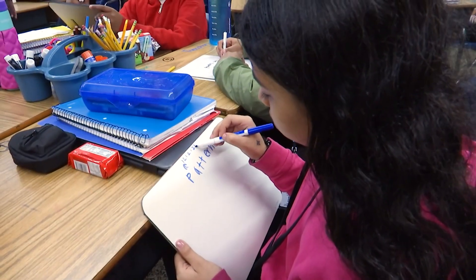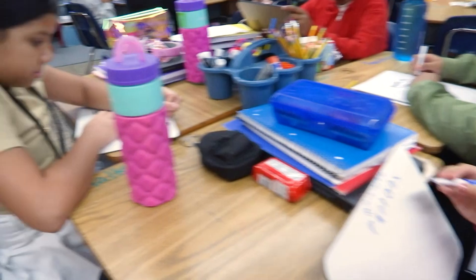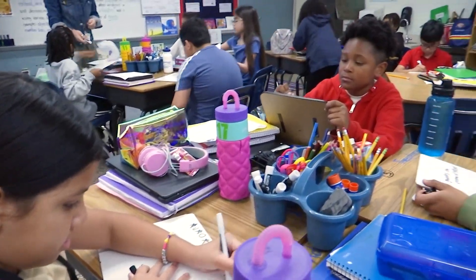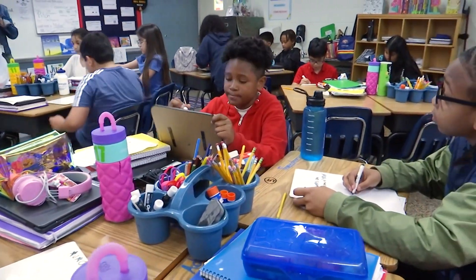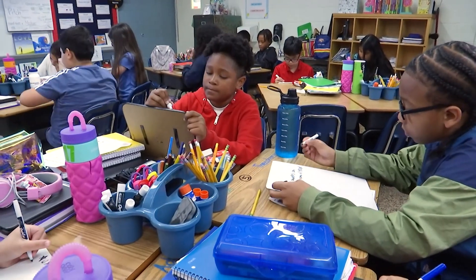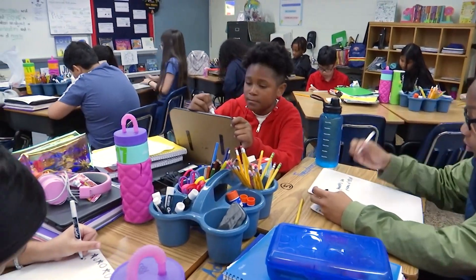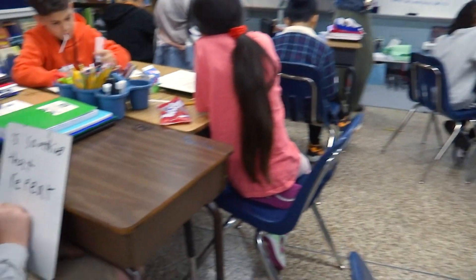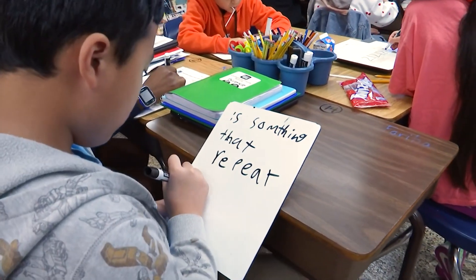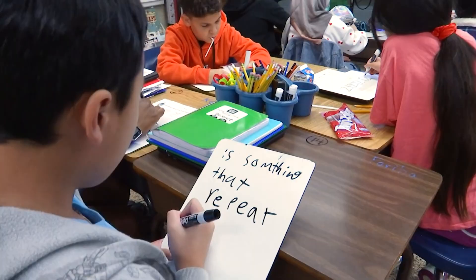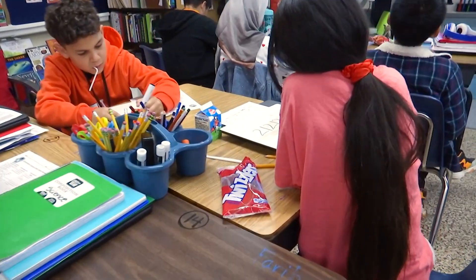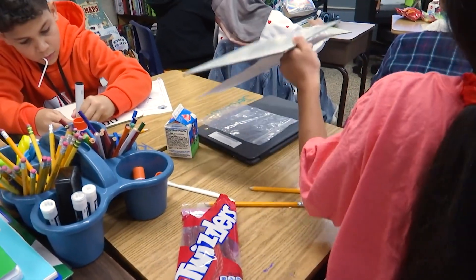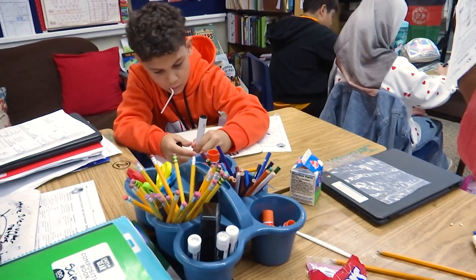Okay, go ahead and start writing. 50 seconds left. Write as much as you can on your board. Draw pictures if that's easier for you. Tell me what you know about patterns. What have you learned about patterns in previous years? What do you think of when you think of patterns? What are some patterns you might see around the room? Think about what a pattern is. I see some people drawing pictures — I love that — and some people are trying to explain it using words. Keep going.